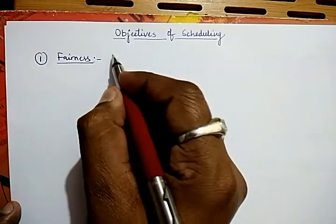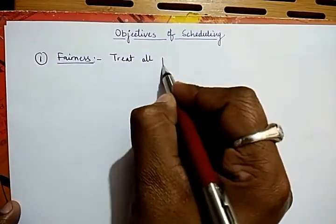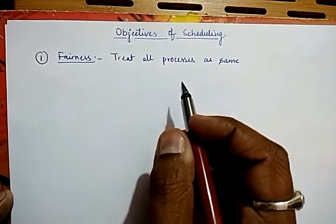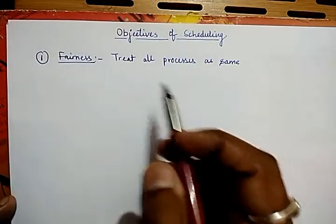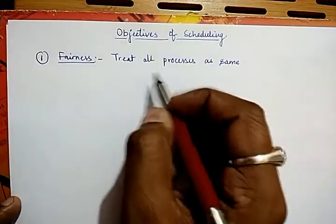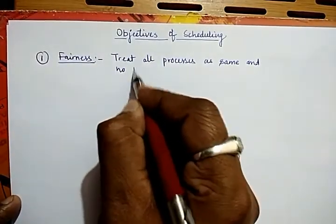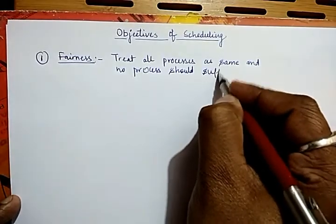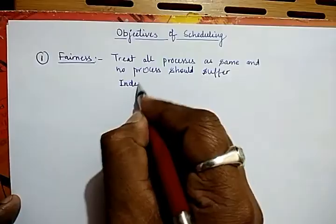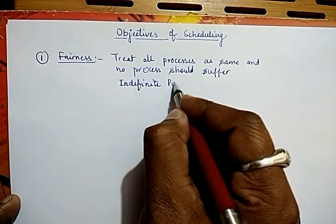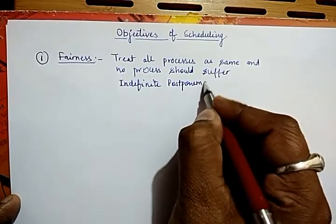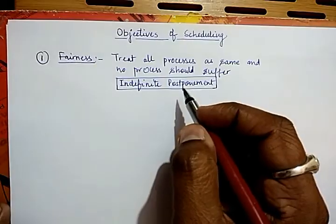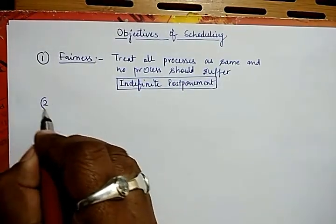Fairness suggests that during scheduling, the CPU or the operating system must treat all the processes as same. No process should suffer — no process should wait for an indefinite moment of time. This is called fairness. The second objective is throughput.